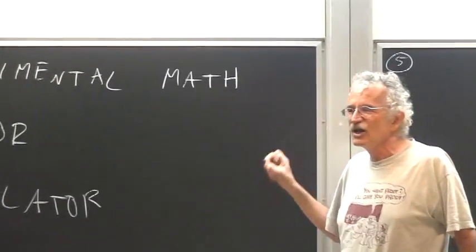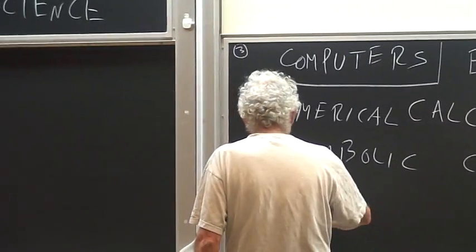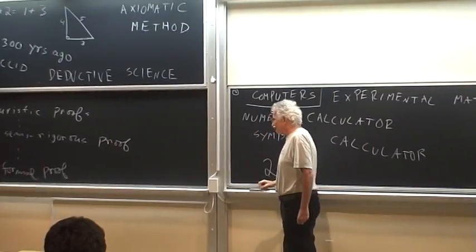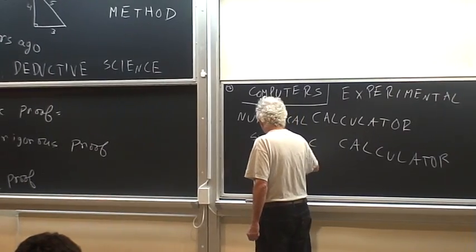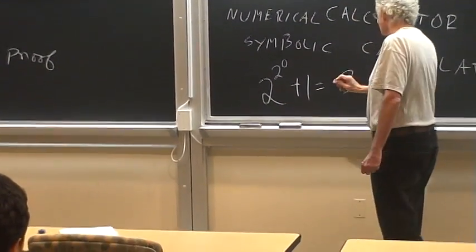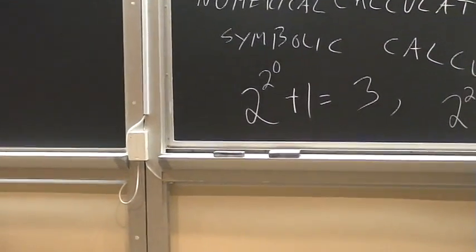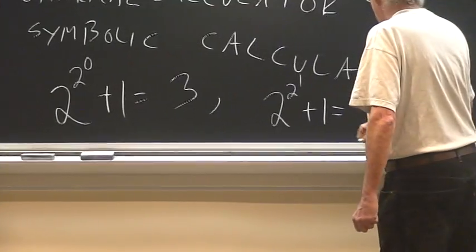You can make lots and lots of conjectures. For example, you can make the following conjectures. You can take 2 to the power 2 to the power 0 and add 1 and get 3. Then you have 2 to the power 2 to the power 1 and have 5.